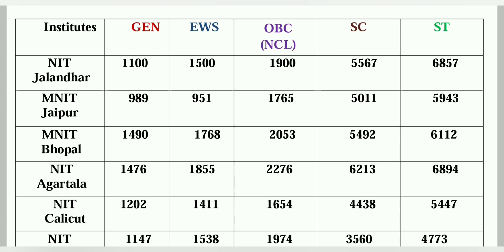So here we have chemistry rank data. This is the third round — meaning the final round counselling closing rank. Looking category-wise at NIT Jalandhar: General category closing rank is around 1100, EWS is 1500, OBC NCL is 1900, SC is 5567, ST is 6857.